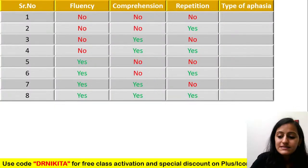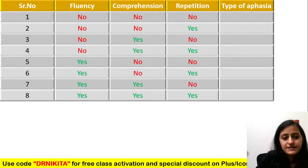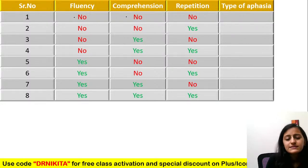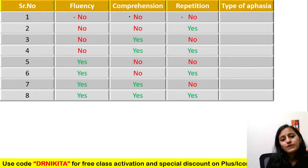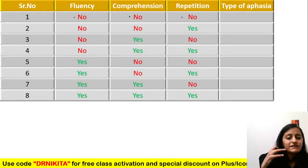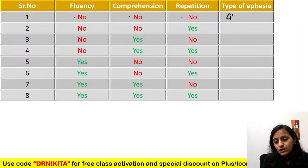Let's decode the table one by one. First: where there is no fluency, no comprehension, no repetition — everything is affected. Fluency affected means the motor part is gone; comprehension affected means the sensory part is gone; repetition also gone. Everything affected — that is global aphasia.